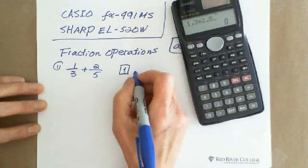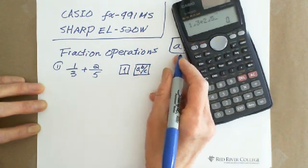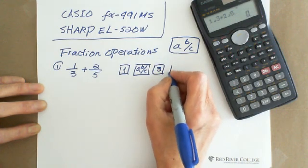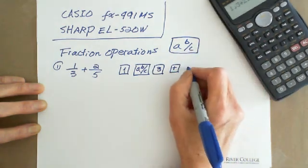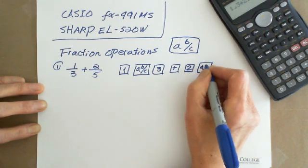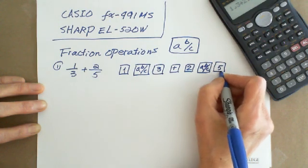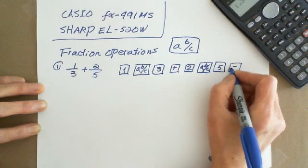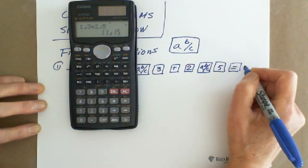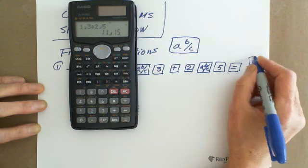then ABC and enter 3. Plus 2, then ABC 5. Then hit the equal sign, and it gives you the answer: 11 over 15.